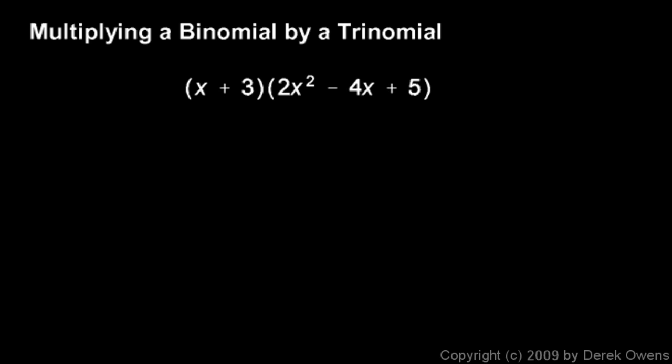And we'll say a few things about multiplying a binomial by a trinomial, and that's what we see in this example. A binomial here with two terms multiplied by a trinomial with three terms. Now we can't do FOIL here. The FOIL method only works for two binomials.